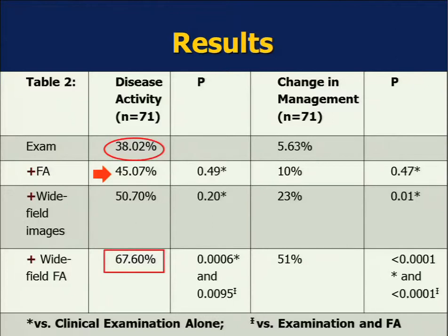Now, given the change in assessed activity, we asked whether there was any change in management. With examination alone, that was 5.6%. Adding traditional fluorescein angiography brought modest change, but when wide-angle fluorescein angiography was added, it changed dramatically from 5.6% to 51%. That is, with the additional information obtainable from the wide-angle system, our decision to change management also changed significantly.